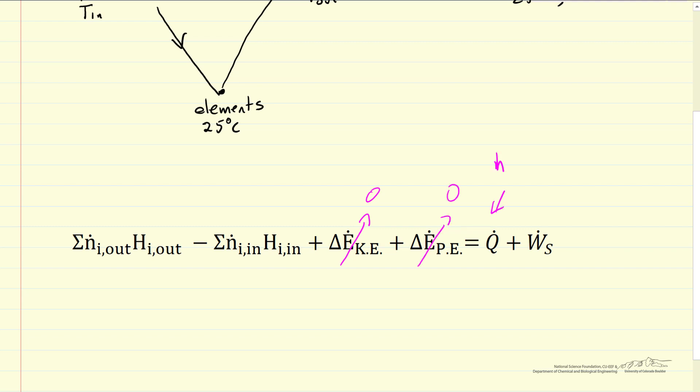This is the heat added per time, and this is the shaft work, again per time, so the dot indicates per time. Now we're left with the two terms, and notice there's no heat of reaction term in this equation. That's because it's taken into account in the enthalpy terms.